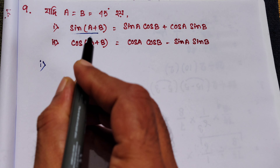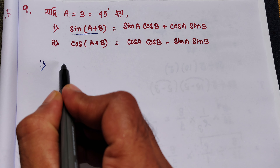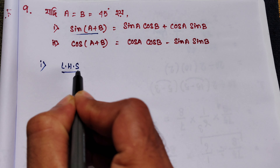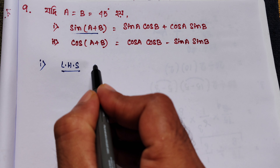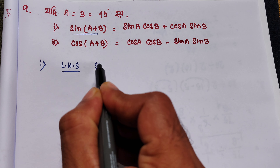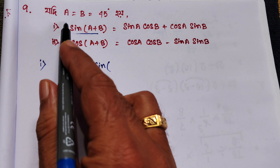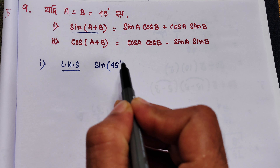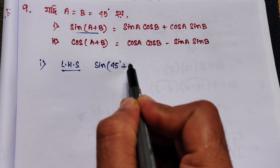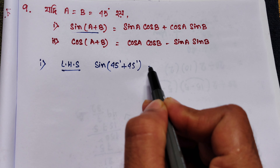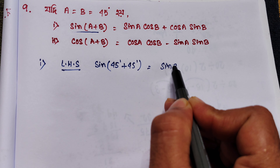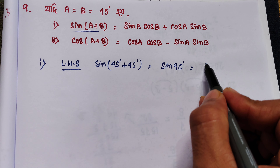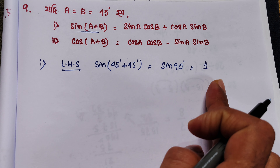So we have to write sin of a plus b on the left hand side. We substitute a equal to 45 degrees and b equal to 45 degrees, which gives sin of 90 degrees. So sin of 90 degrees is 1, and we write 1 on the left hand side.